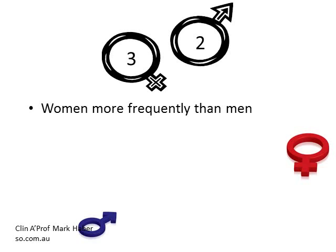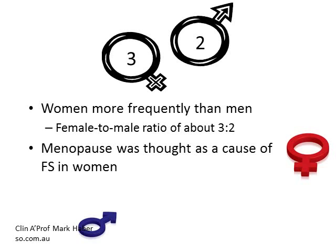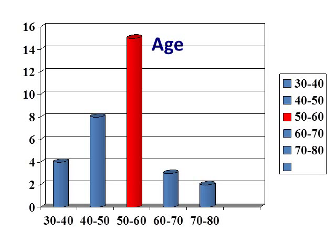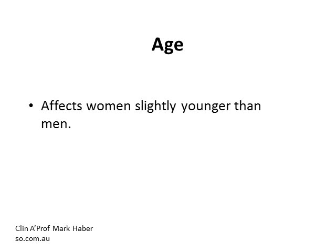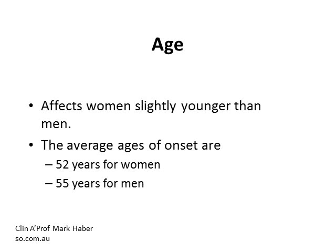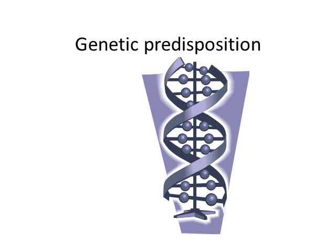Women are affected more frequently than men, with a female to male ratio of 3 to 2, so it is not particularly dramatic. Menopause was thought to be a cause of frozen shoulder in women; however, it is realised that this is coincidental and it is mainly an age-related factor. Frozen shoulder appears to affect people almost exclusively between the ages of 50 and 60. It does affect women slightly younger than men, with an average age of onset of 52 years in women and 55 years in men. There does also appear to be a genetic predisposition to this condition.